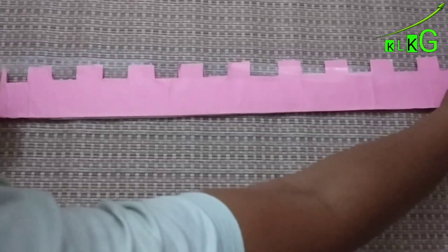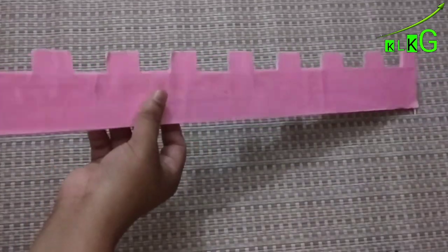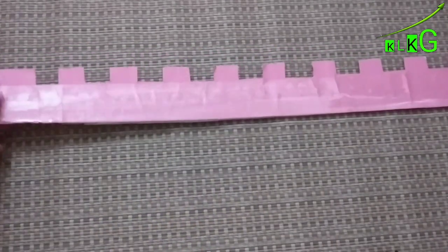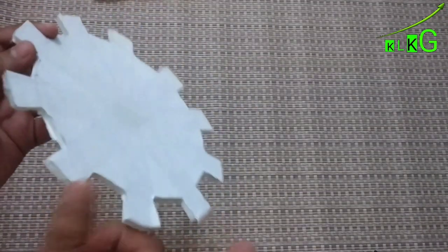To make it more beautiful, I kept pink color paper as well as I pasted cello tape on the circle and the straight strip both.